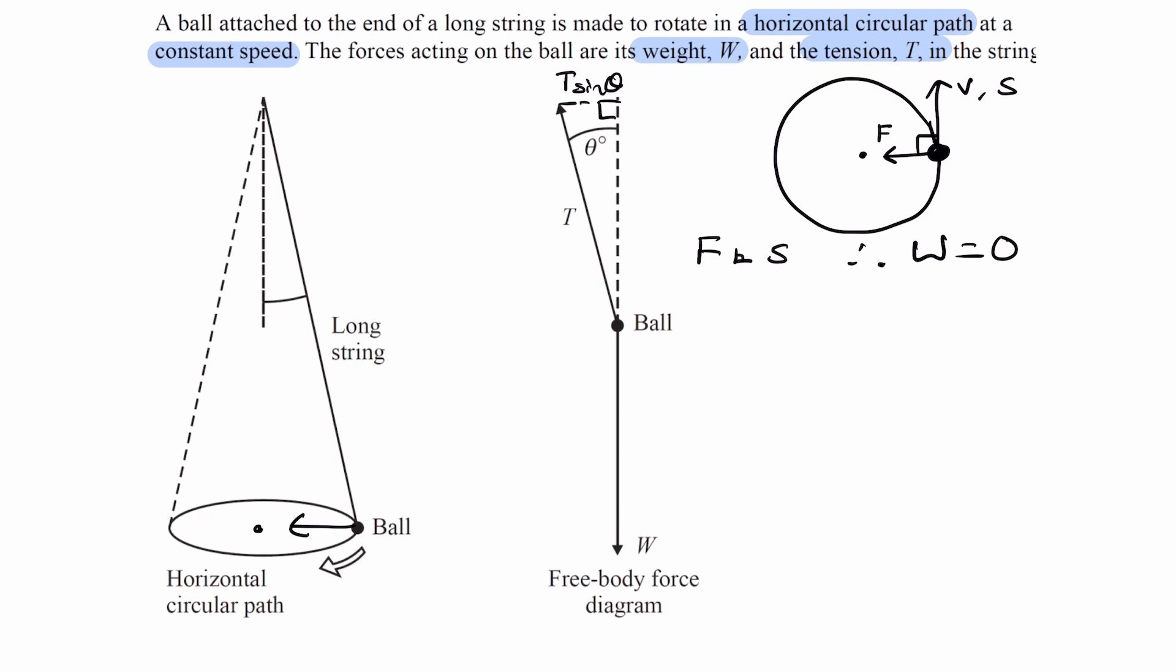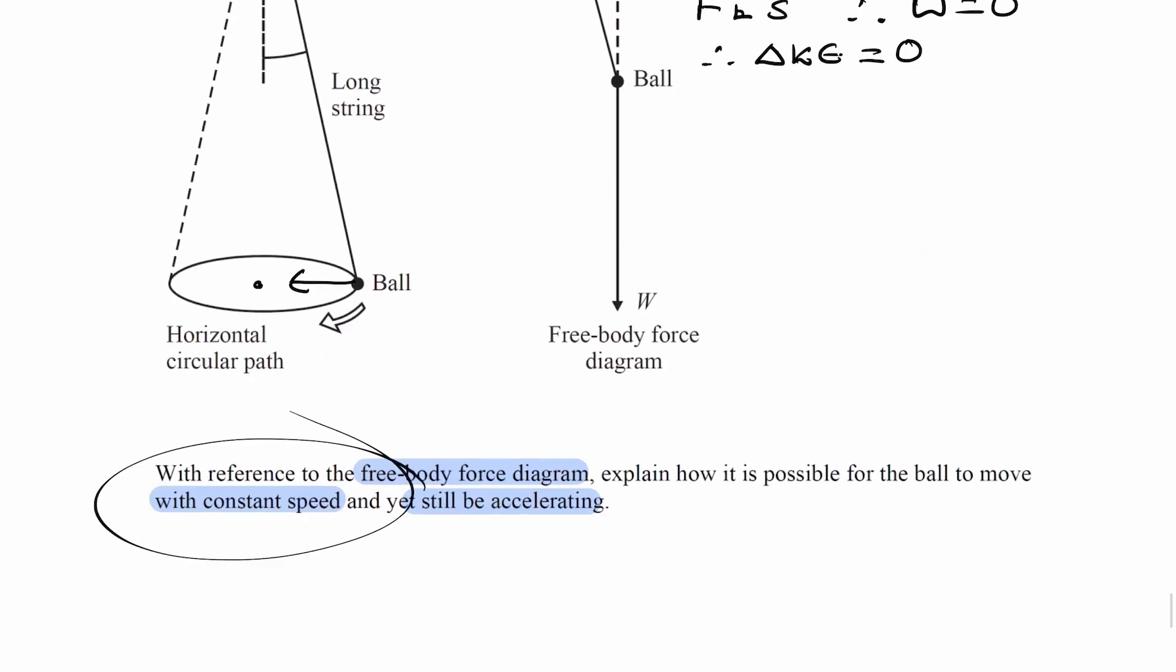Work done results in a transfer of energy. So if the work done is zero, that means there's no transfer of energy, and so the change in kinetic energy would be zero. If there's no change in KE, there will be no change in speed. That's why we are moving at a constant speed.